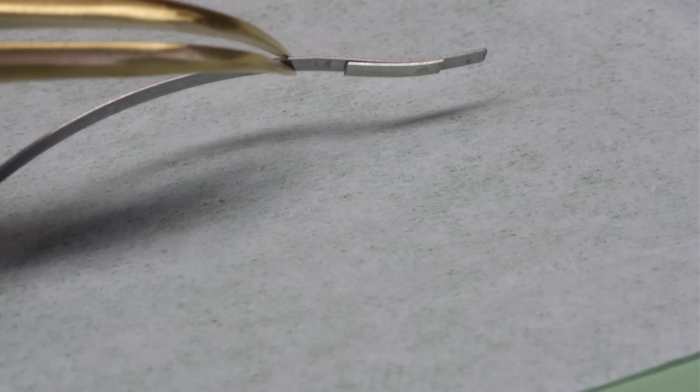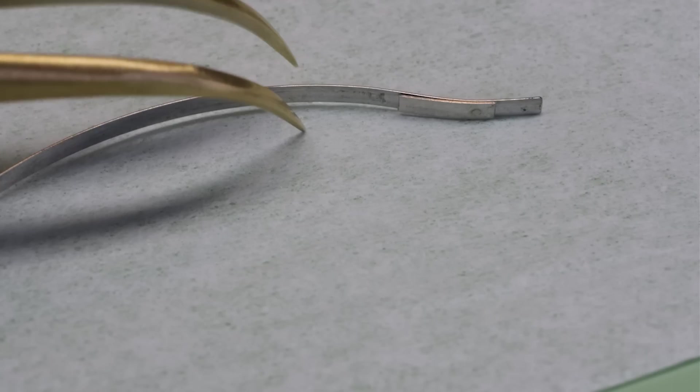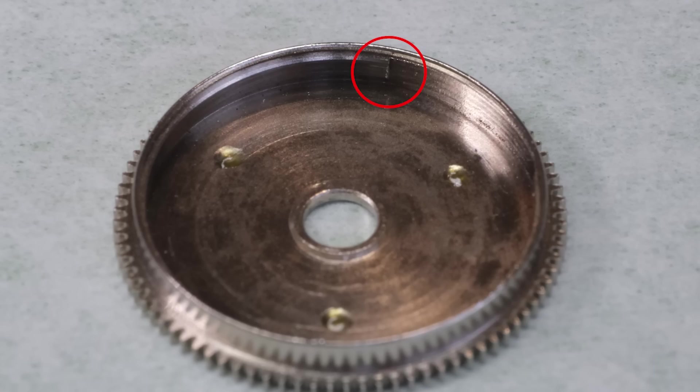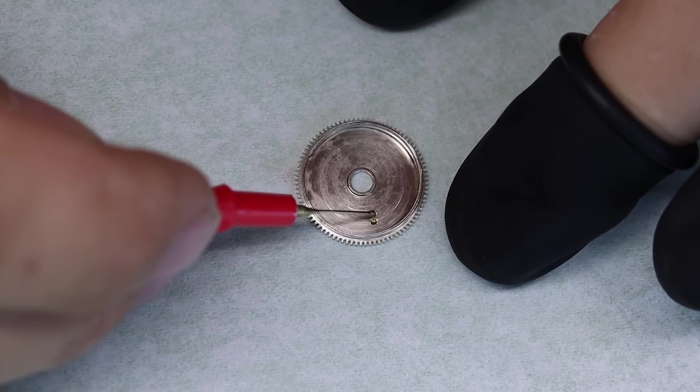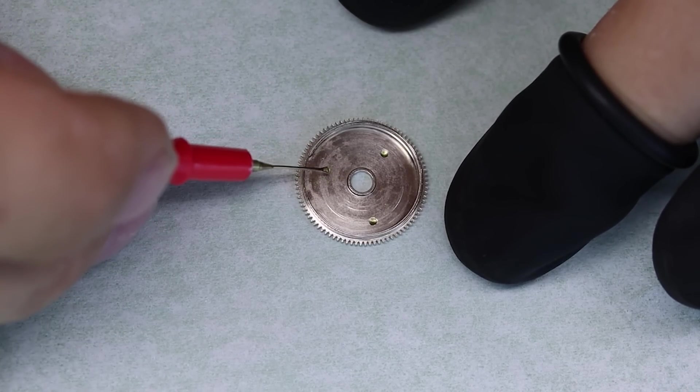The other end of the mainspring has a bridle, which stops against the cutout in the barrel wall, and that way the mainspring doesn't slip inside the barrel when we wind it.